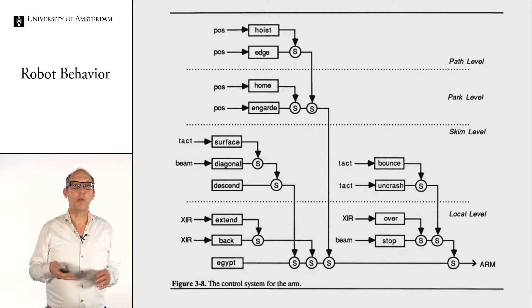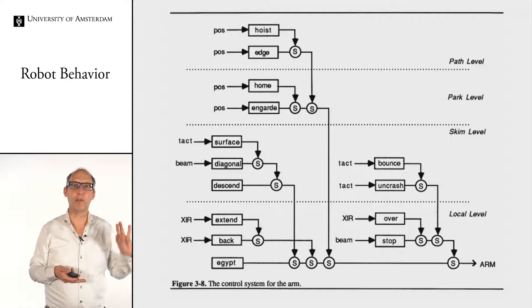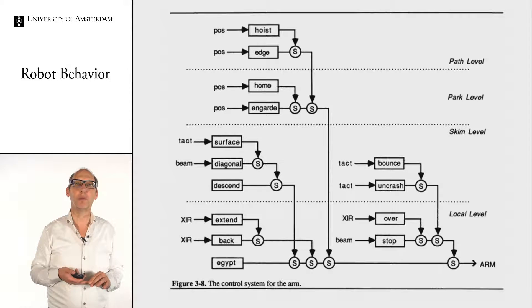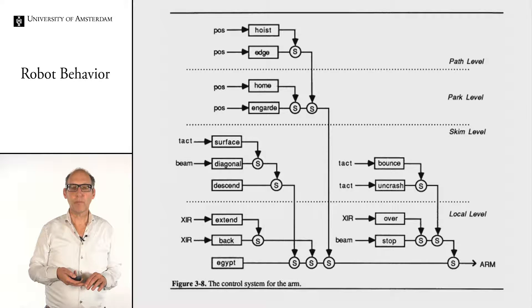Looking at how this appears in a state diagram, you can see the different modules with round circles marked 'S' — the subsumption points where higher layers overrule lower ones. You can build augmented state diagrams like this to construct a robot like Herbert.